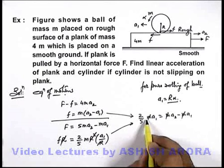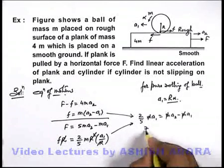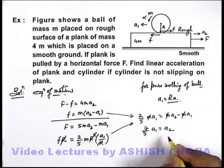...that I will be getting 2/5 plus 1 is 7/5, a1 equals a2. This is the relation I am getting here.